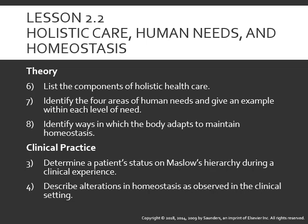The second part of Chapter 2 is holistic care, human needs, and homeostasis. In this section we will list the components of holistic health care, identify four areas of human needs and give an example within each level of need, identify ways in which the body adapts to maintain homeostasis, and in our clinical practice we're going to determine a patient's status on Maslow's hierarchy and describe alterations in homeostasis as observed in the clinical setting.